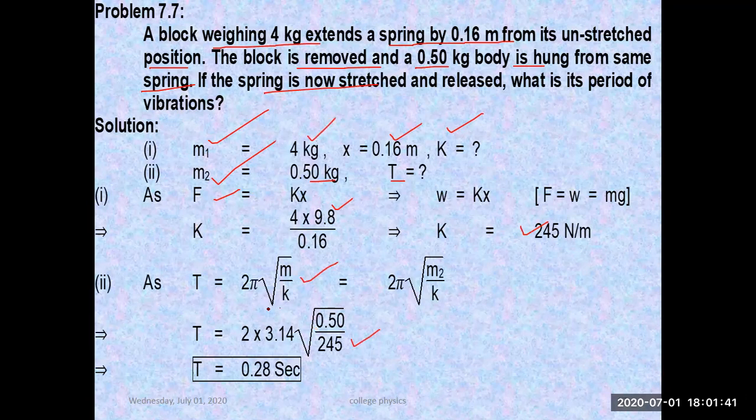After calculating value of K, then you will put the value in this formula. This is the formula used to calculate time period of a mass which is attached with the spring and it depends on mass: T = 2π√(m/K). After putting the value of mass and K constant...